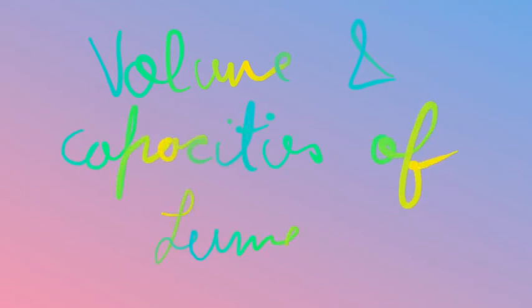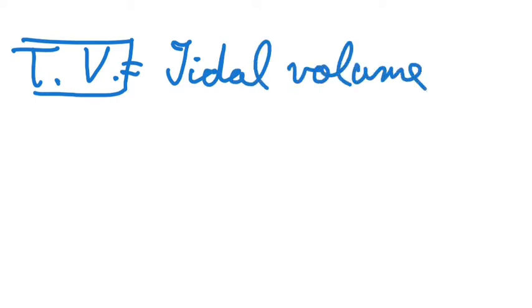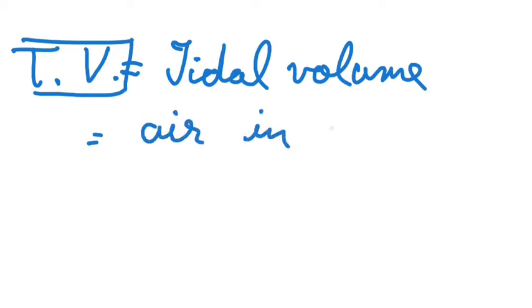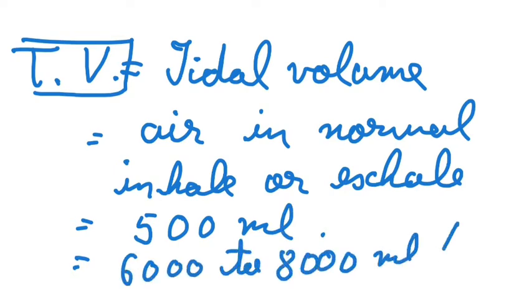Now let's move to some terms related to the volume and capacity of lungs. First we have tidal volume (TV), defined as the volume of air inspired or expired during normal respiration. It is approximately 500 ml, meaning the inflow or outflow of air is around 500 ml every time. A healthy human can inspire or expire approximately 6000 to 8000 ml of air per minute.